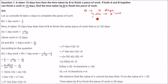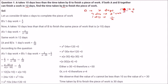So for one day, what will be B's work? It will be 1 by X. If X days is B's total work, you divide both sides by X, you get one day's work. So one day's work will be 1 by X. I hope you got the idea.